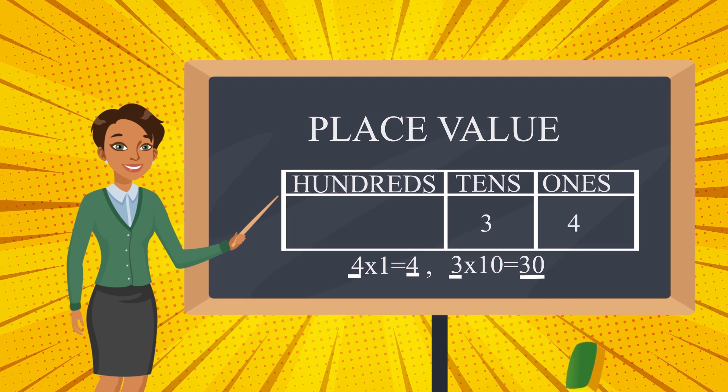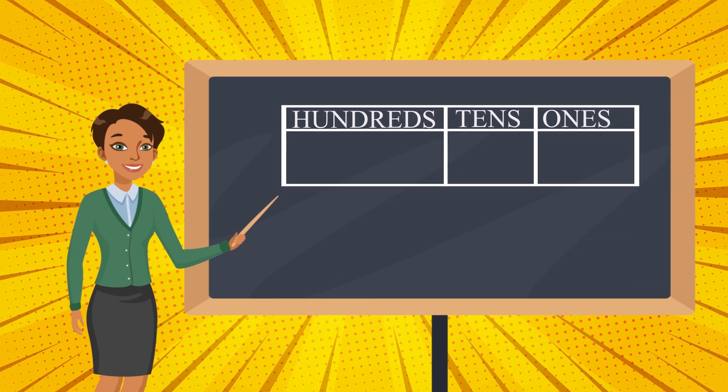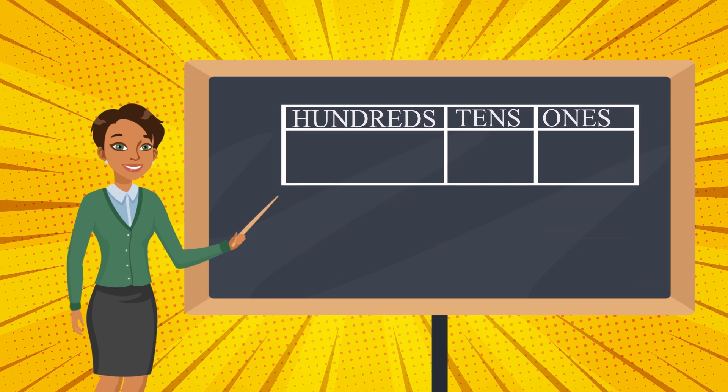If we see for a 3 digit number, say, 375. Now, let's place this number in the place value chart. From where we should start? We should start from 1's place. So, 5, 7, 3.